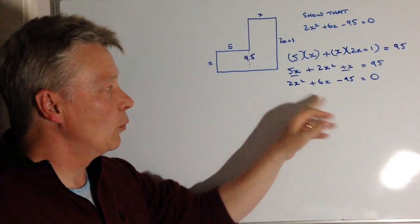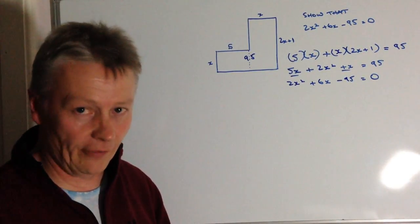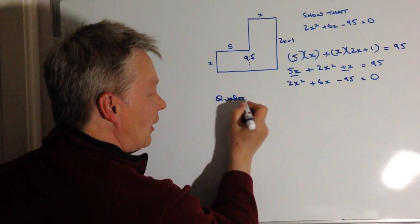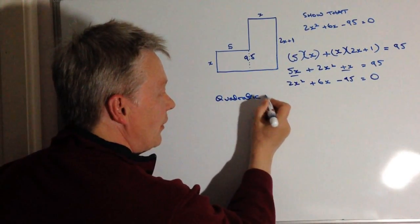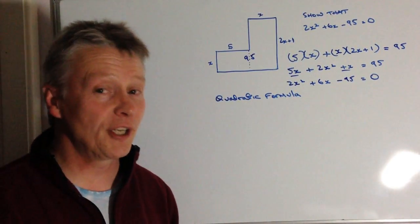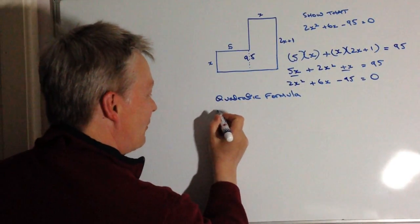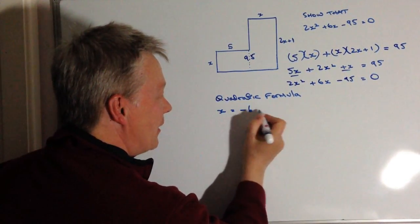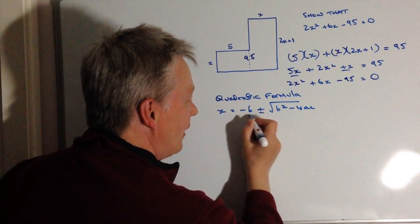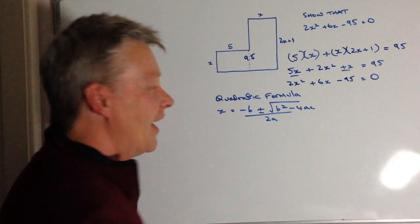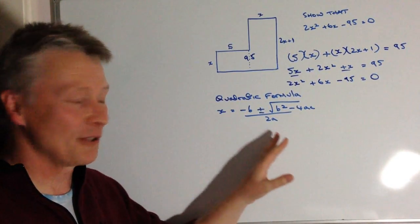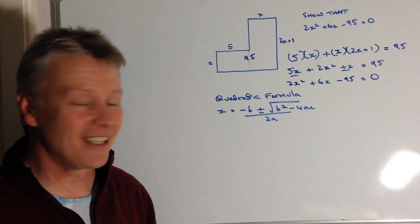So the next thing is we're going to work out the value of x. And the way I'm going to do that is I'm going to use something called the quadratic formula. Now, you need to remember this for GCSE. It used to be given on a formula sheet. Unfortunately, not now. You're going to have to remember x equals minus B plus or minus the root of B squared minus 4AC all over 2A. If you're not sure about that, you need to find a way of remembering it because unfortunately for you, you've got to remember it now for the new GCSEs.